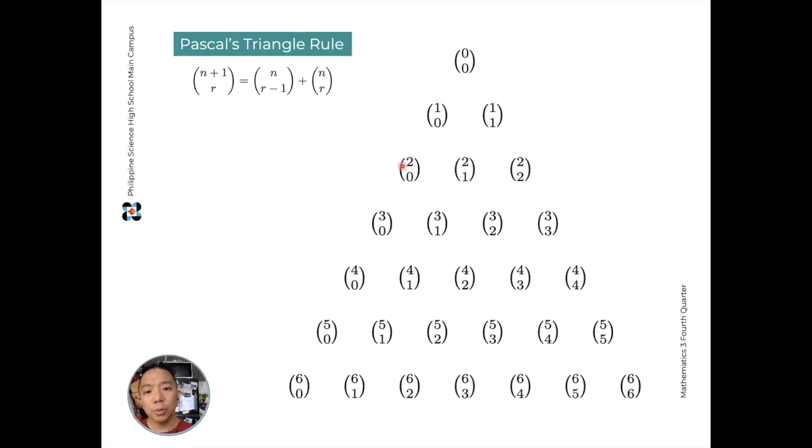Then, 1 choose 0, 2 choose 0, 3 choose 0. All of these are 1. Because I have n elements, but I'll just make an empty group. I can only make one empty group. On the right side, I have 1 choose 1, 2 choose 2, 3 choose 3. I have n elements, but I'll make groups that also contain n. So I'll use them all. I can only make one combination. So these are all equal to 1.